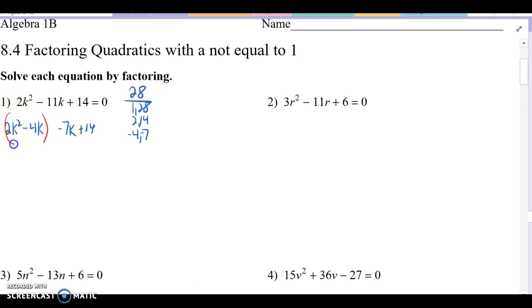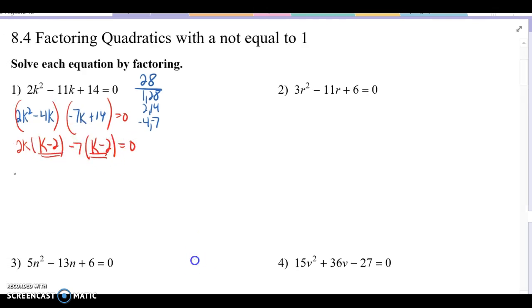Now, group and group equals 0. The GCF for these first two terms is 2k. If we take that 2k out, we get k minus 2. And GCF for these two terms, remember we want this leading coefficient to become positive. So we're going to factor out a negative 7, which makes it become k minus 2 on the inside. Good news is that those are the same. So then in factored form, we have 2k minus 7 times k minus 2 equals 0.